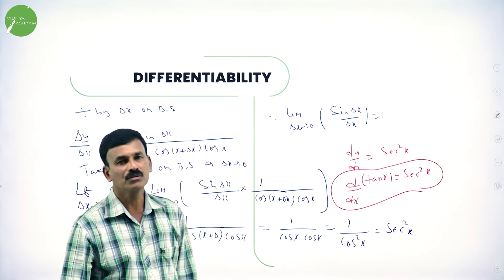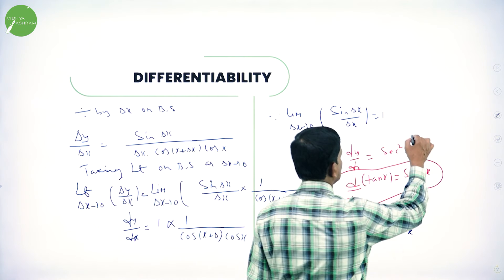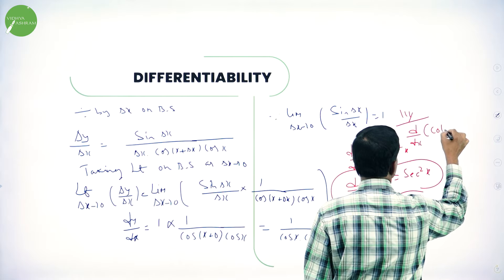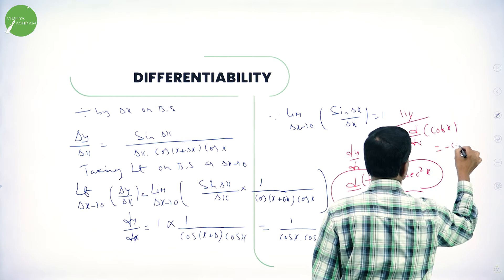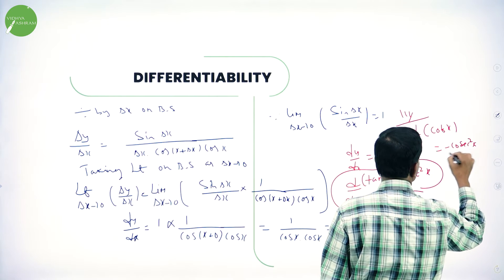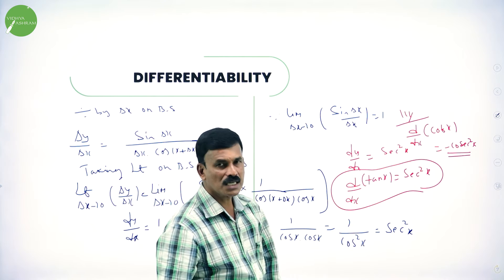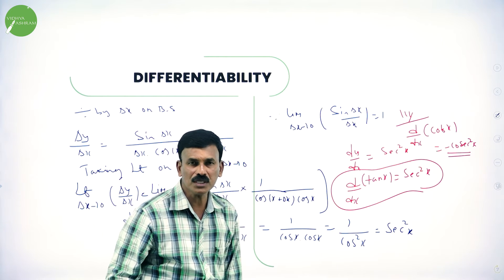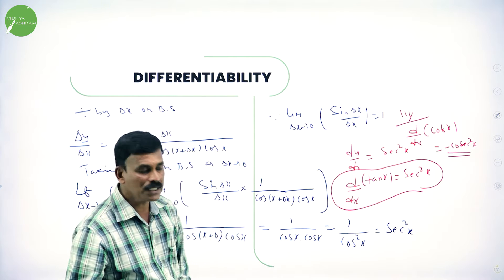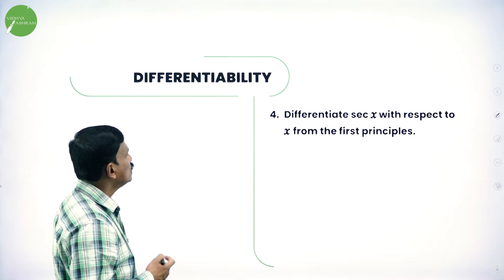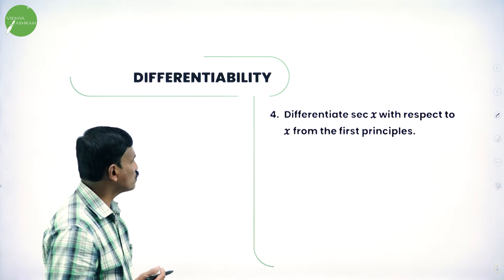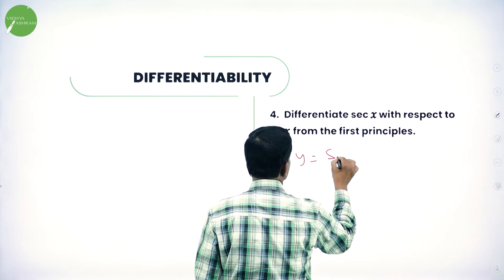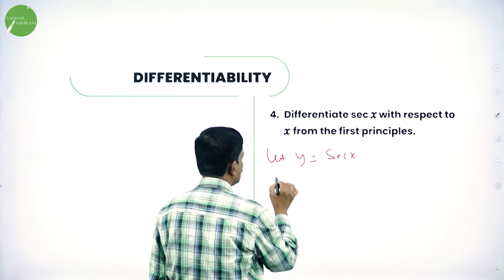Therefore dy/dx of tan x is always equal to sec²x. Similarly, for cot x: differentiation of cot x is equal to -cosec²x. So differentiation of tan x is sec²x and differentiation of cot x is -cosec²x. Now let us take sec x next: differentiate sec x with respect to x from first principle.